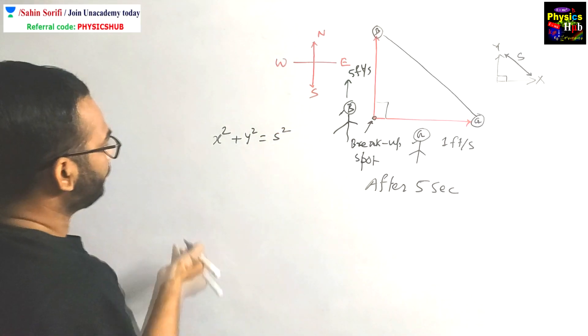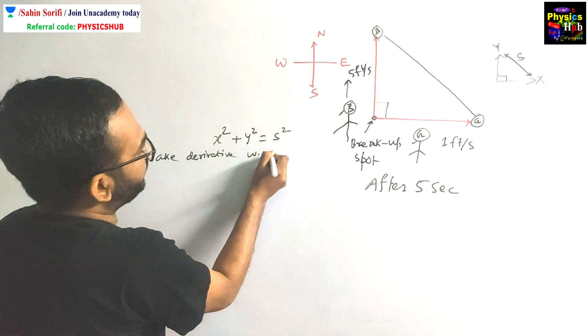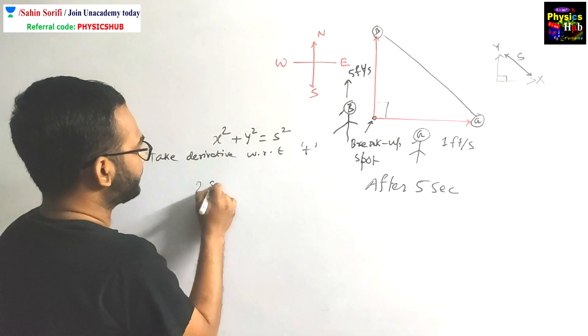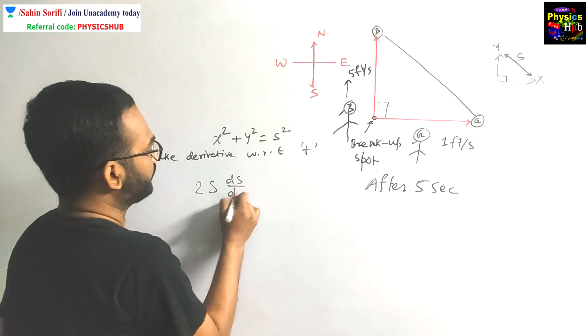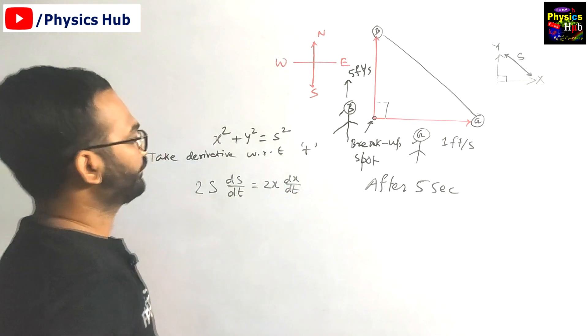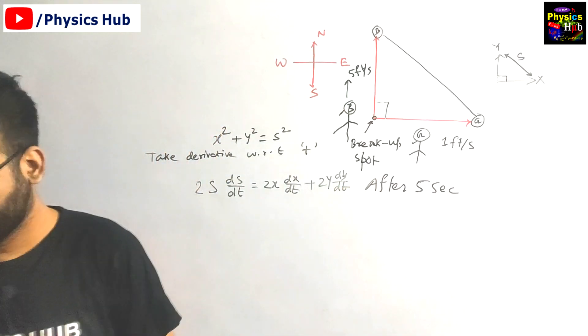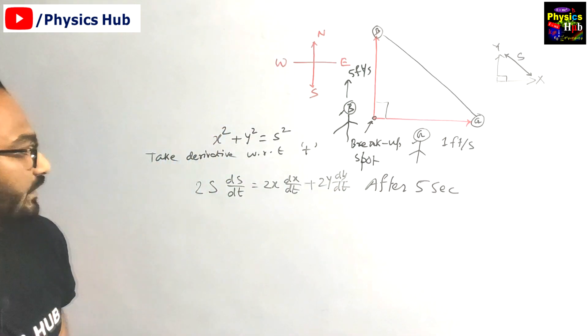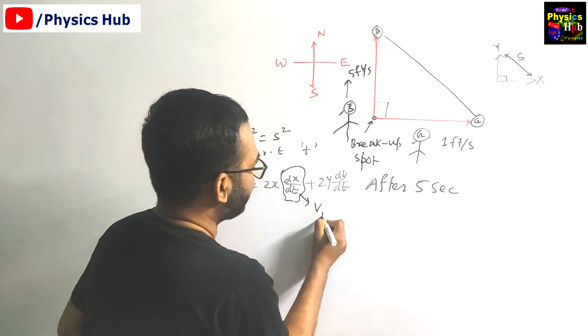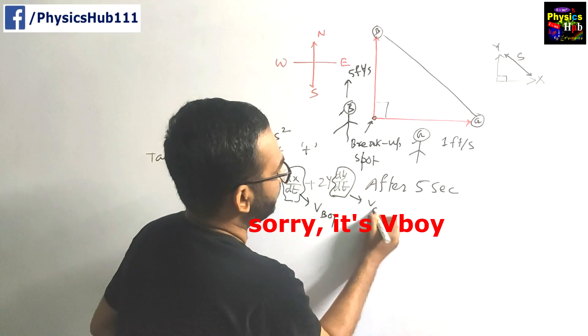Now take the derivative with respect to t. Then what will you get from this? You will get 2s·ds/dt = 2x·dx/dt + 2y·dy/dt. Clear? So dx/dt is the velocity of the boy and dy/dt is the velocity of the girl.